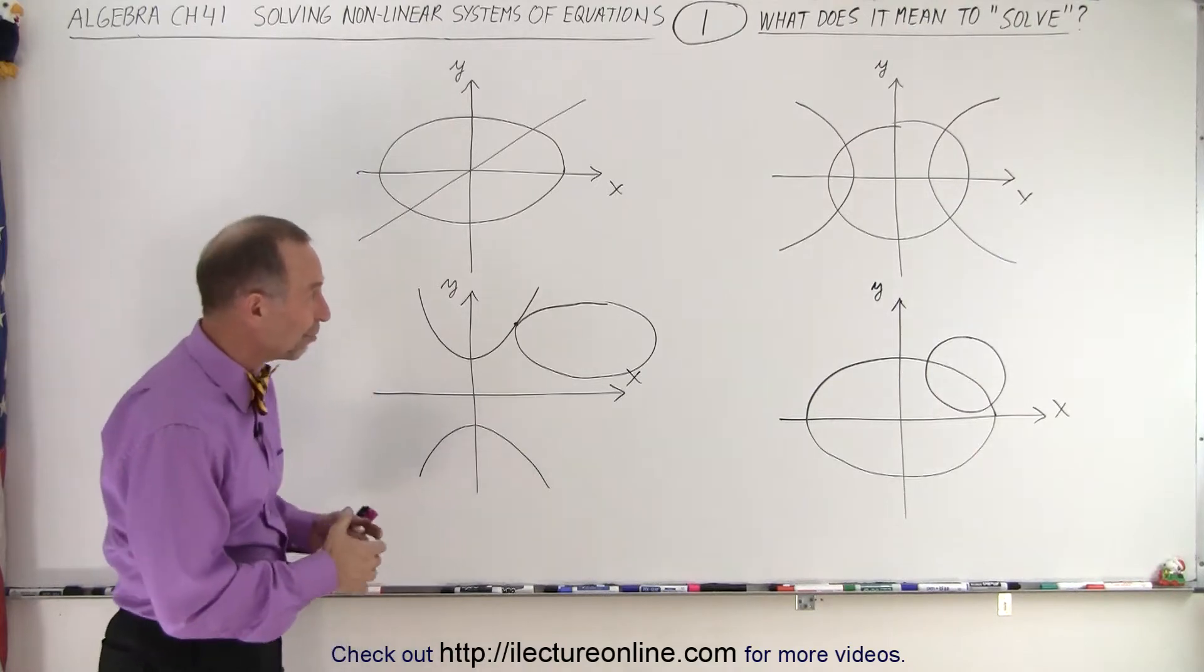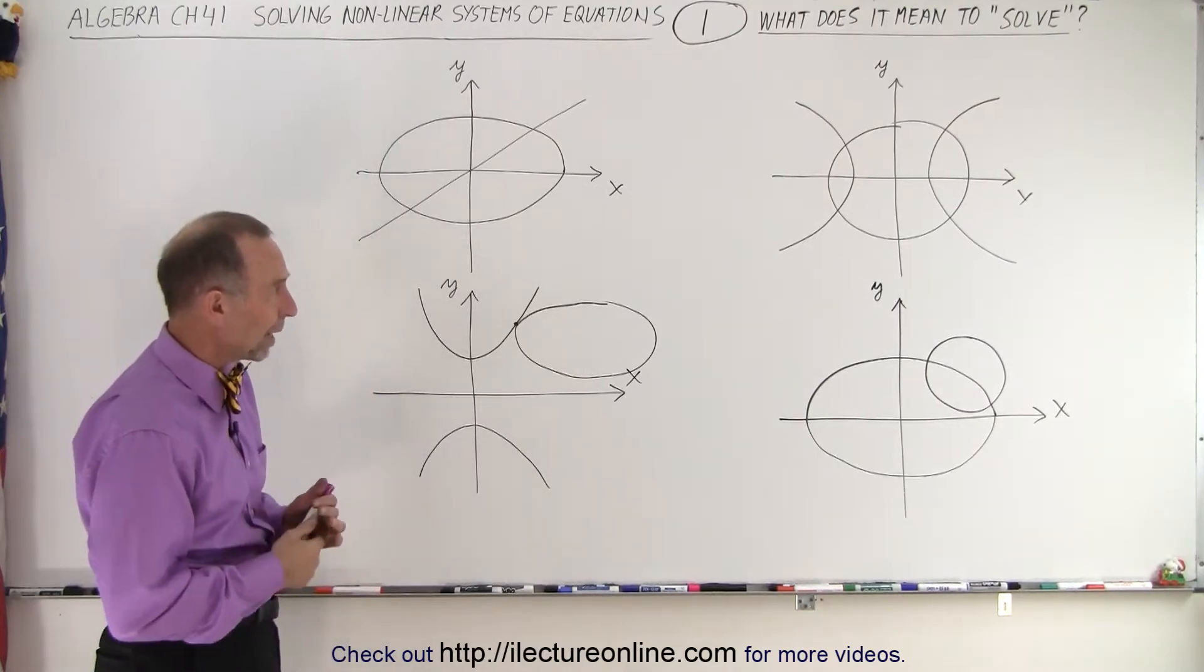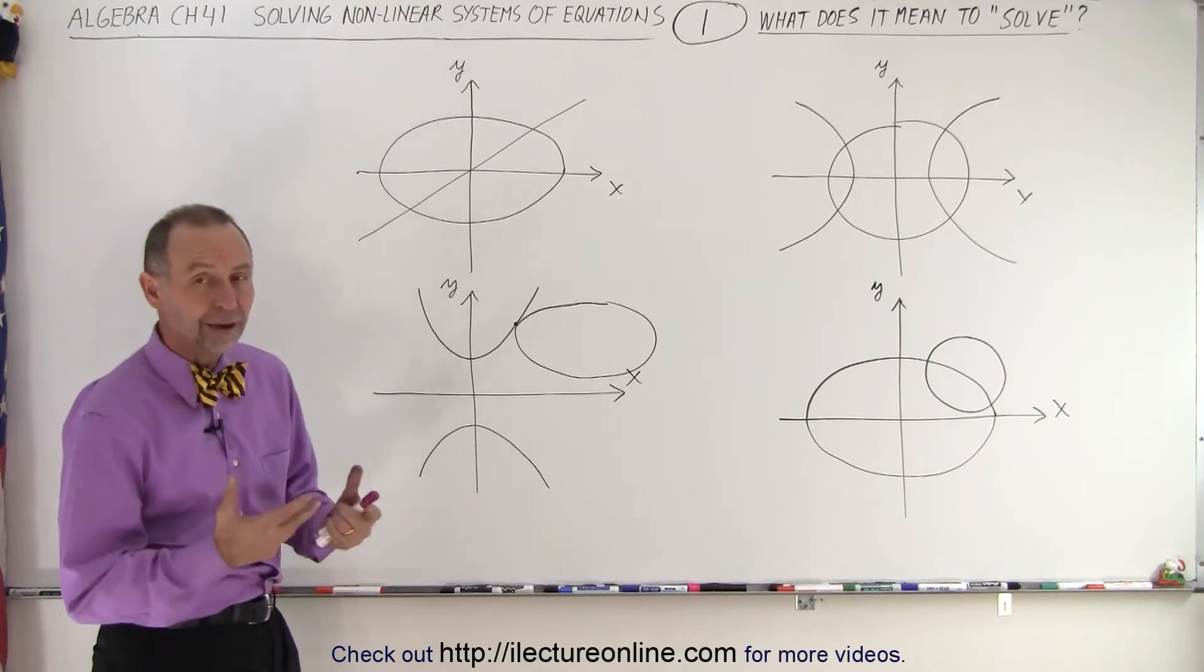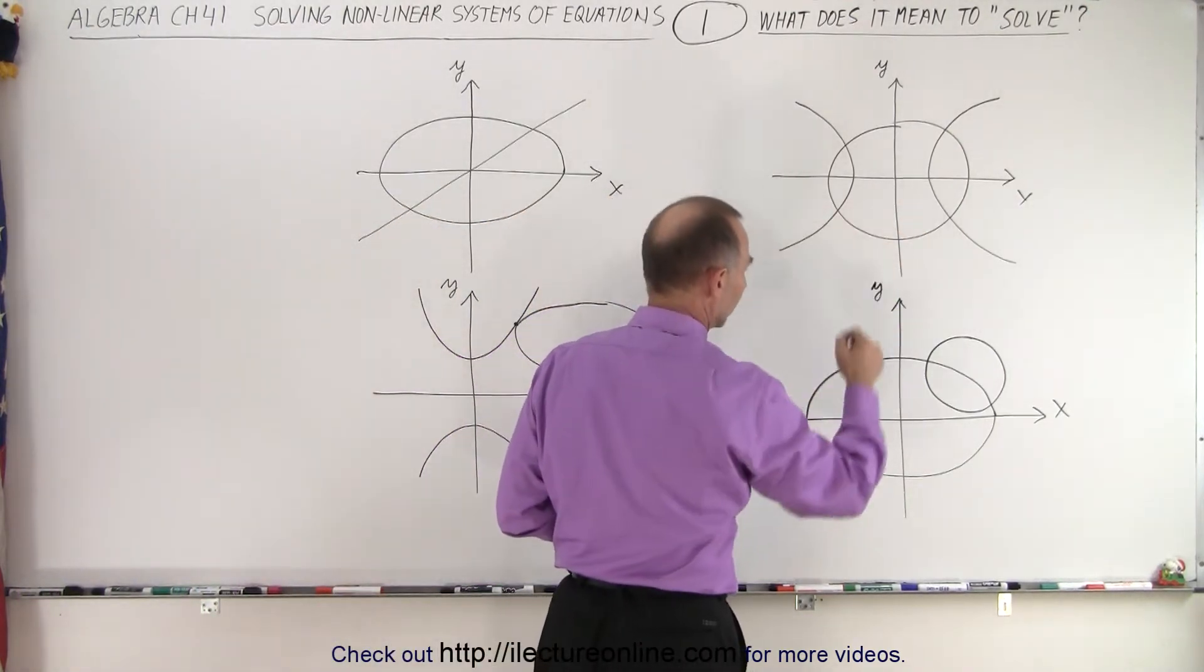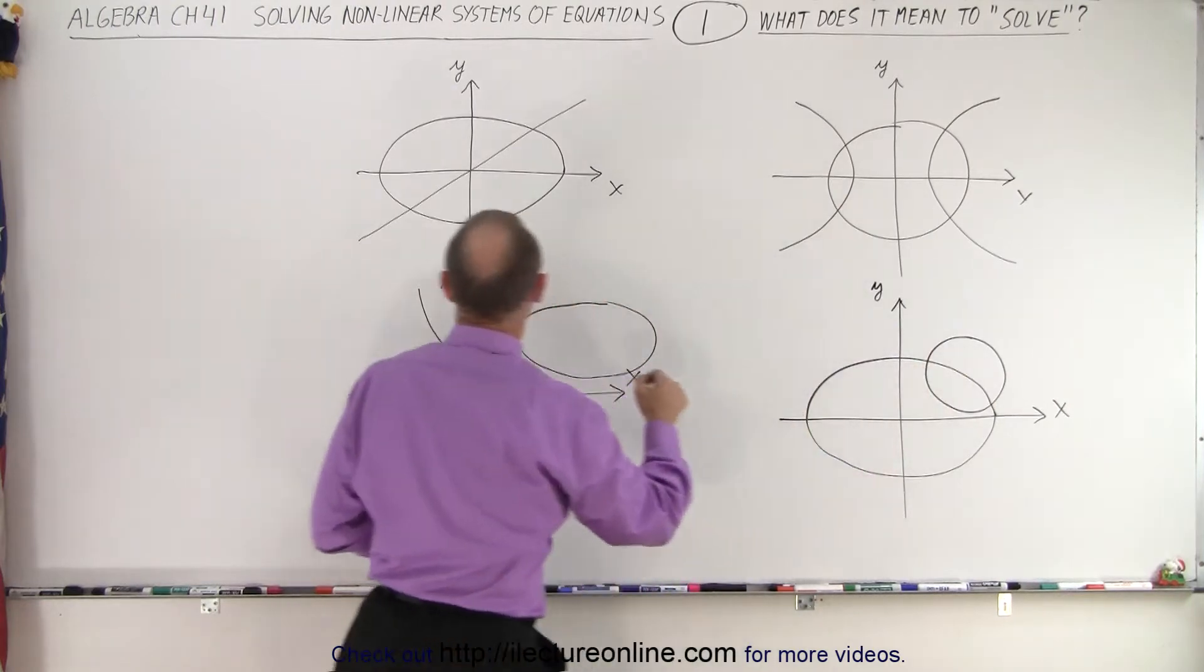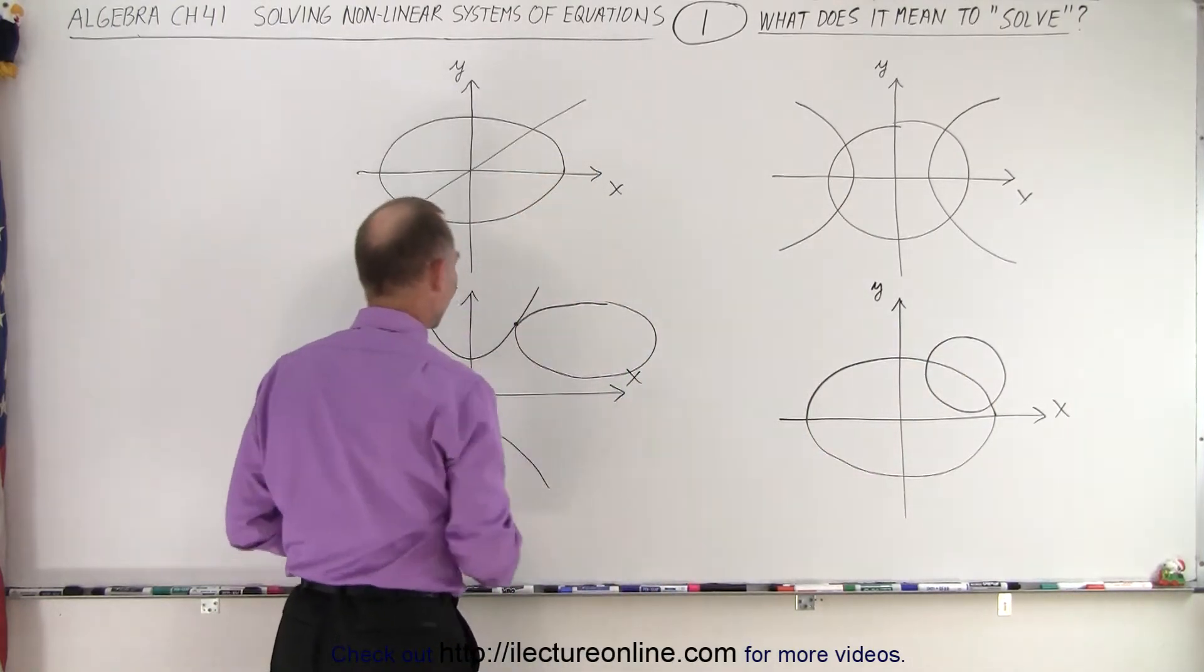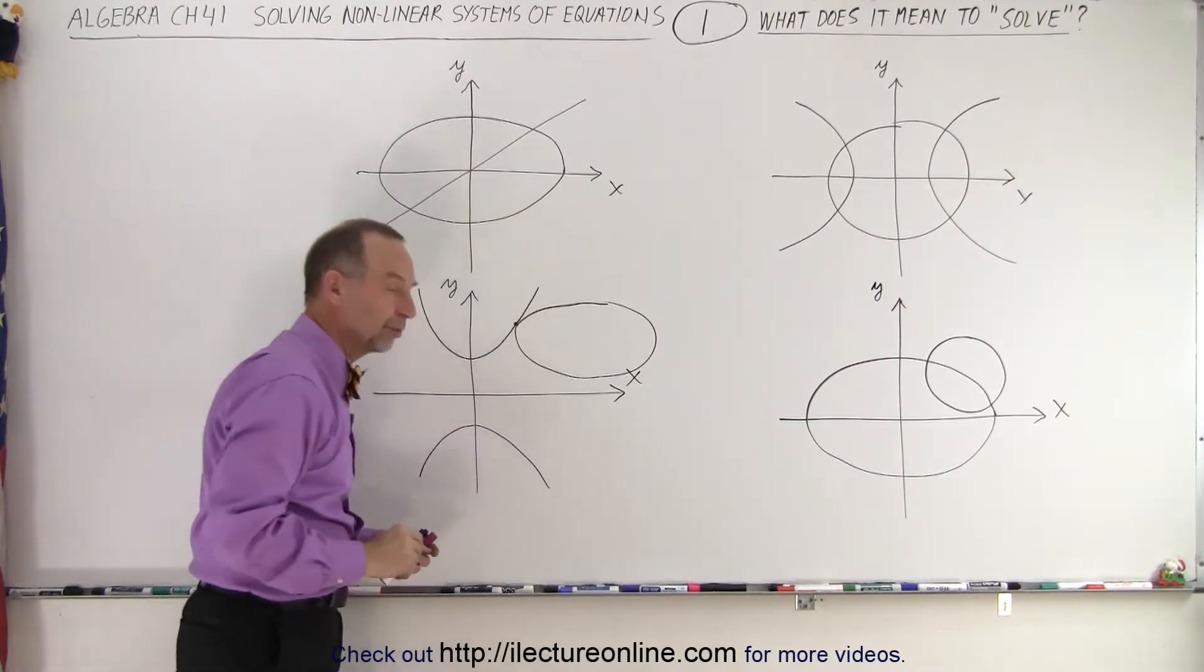Well, notice here we have four coordinate systems, an x and a y-axis. In each coordinate system we have a couple of graphs representing functions. Here we have a hyperbola and a circle, an ellipse and a circle, here we have a straight line and an ellipse, and we have a hyperbola and an ellipse.